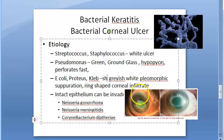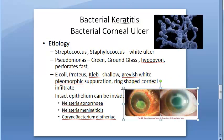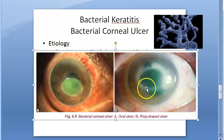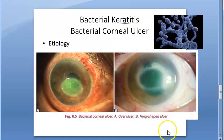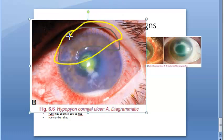E. coli, Proteus, and Klebsiella — the Enterobacteriaceae — cause a shallow ulcer with grayish-white pleomorphic separation and diffuse stromal opalescence. Endotoxins produced by Gram-negative bacteria produce a ring-shaped corneal infiltrate. The iris may appear muddy and the pupil may be small because of iritis.